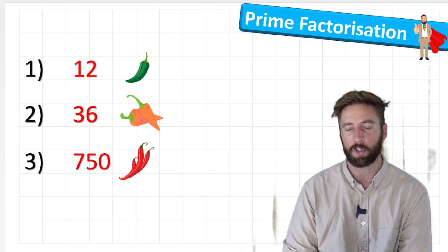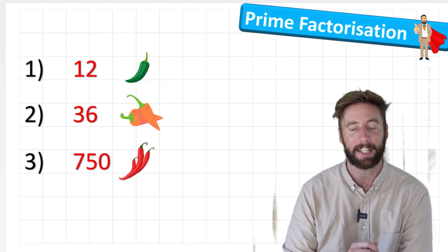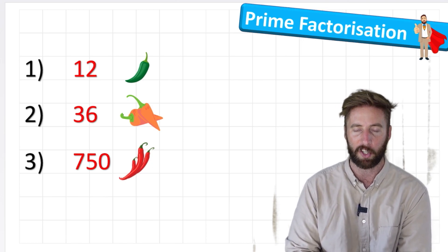Okay, so we have these three numbers we're going to focus on today. We have the number 12, which is our Green Chili Challenge. We have the number 36, our Orange Chili Challenge, and then we have 750, our Red and our Hardest Chili Challenge.